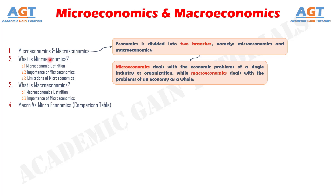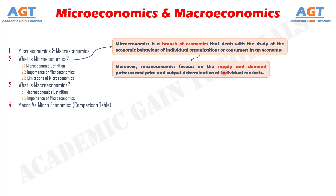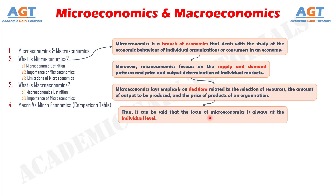What is microeconomics? Microeconomics is a branch of economics that deals with the study of the economic behavior of individual organizations or consumers in an economy. Microeconomics focuses on the supply and demand patterns and price and output determination of individual markets. Microeconomics lays emphasis on decisions related to the selection of resources, the amount of output to be produced, and the price of products of an organization. The focus of microeconomics is always at the individual level.